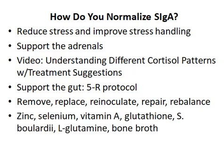Supplementation isn't always necessary to balance secretory IGA, but some of the natural agents shown to help with low secretory IGA include zinc, selenium, vitamin A, and Saccharomyces boulardii. Since a leaky gut is common with a low secretory IGA, you might want to consider gut healing foods or supplements such as L-glutamine and bone broth.